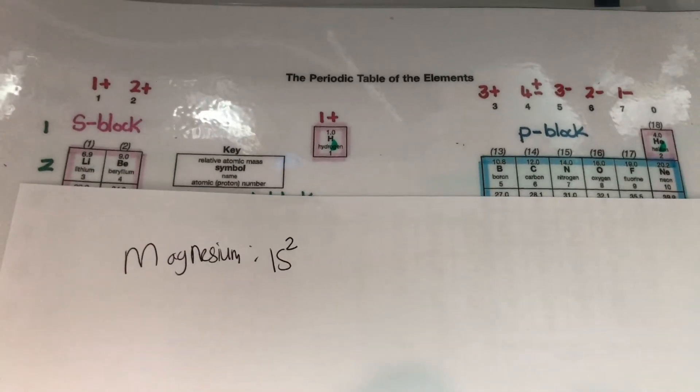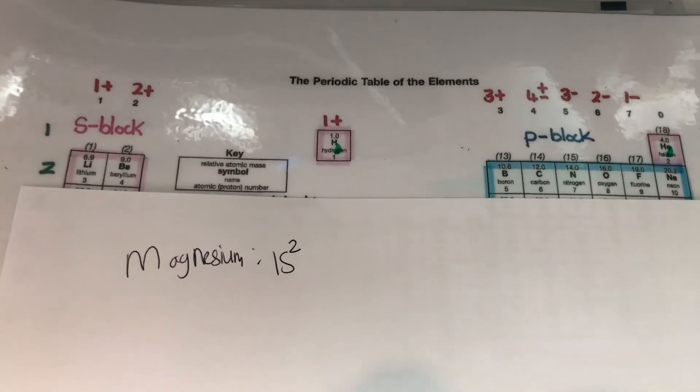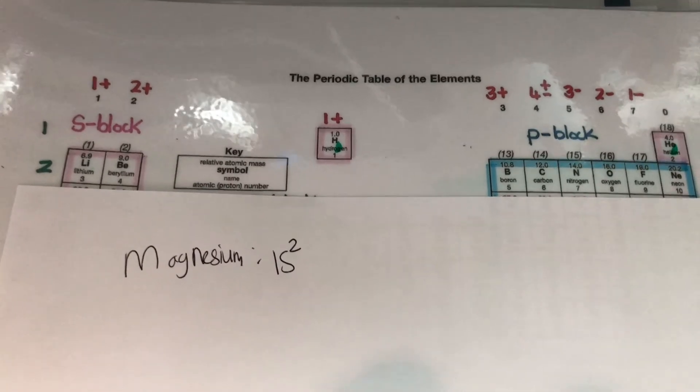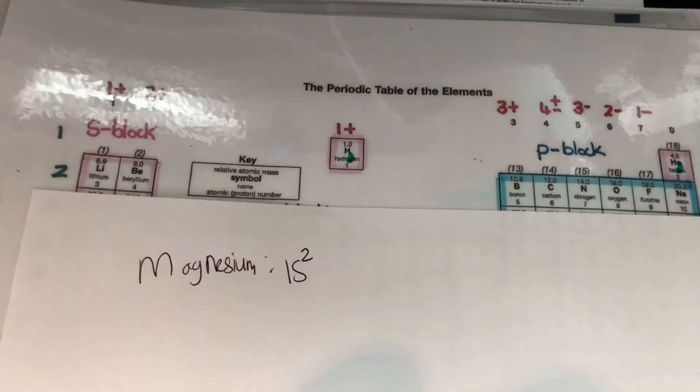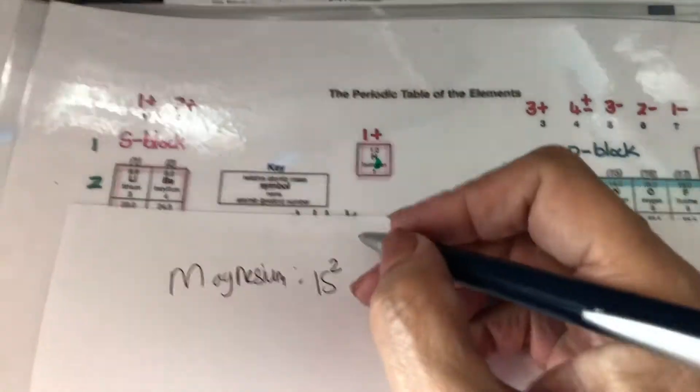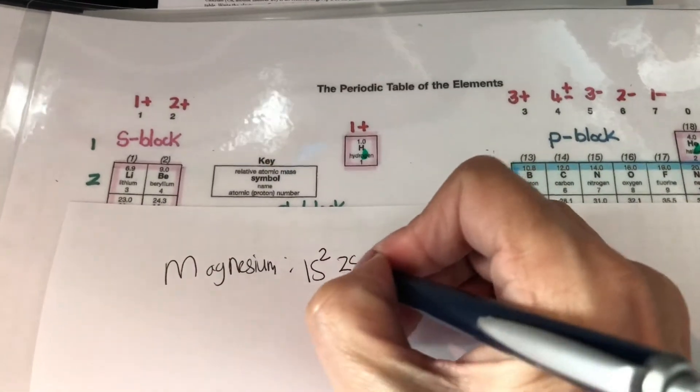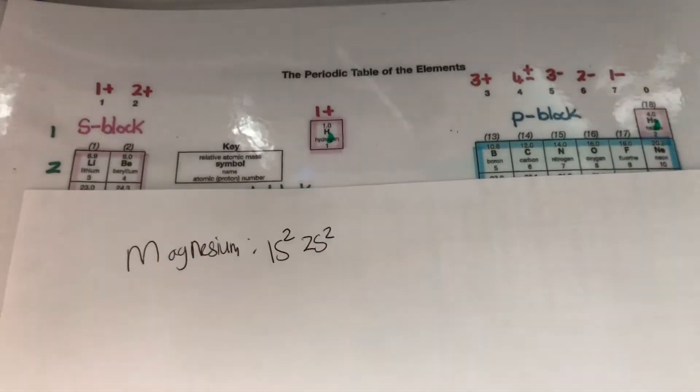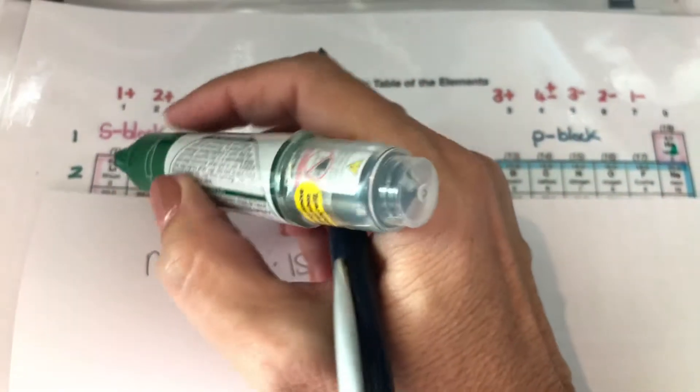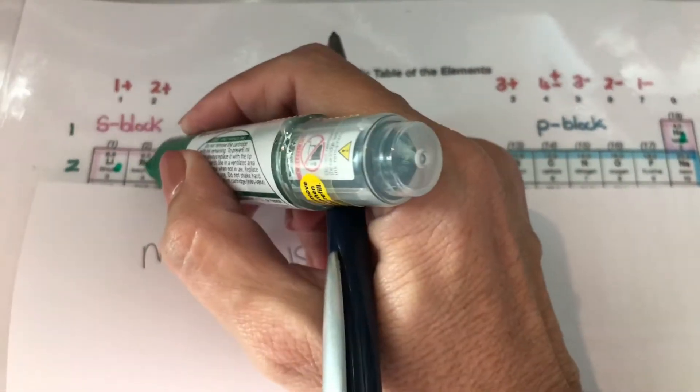Then next I would have to go through the second energy level to get to magnesium and you can see 2S is going to be 1, 2. 2S is 2. So now I will be 1, 2.